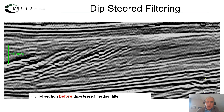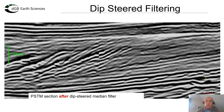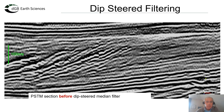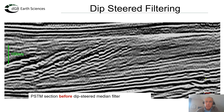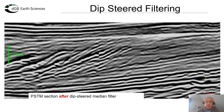Here's an example. This is an input — we see it's pretty noisy — and if we apply a dipsteered median filter, then we remove the noise. I'll toggle this a couple of times: before, after, before, after.